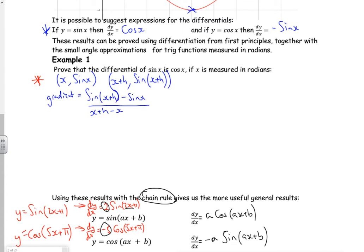So that's sine of x plus h minus sine x all over a change in the x values, which is x plus h minus x. Right, now then, this here, use your sine a plus b formula.